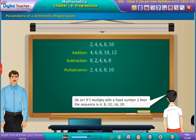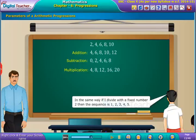If I multiply with the fixed number 2, then the sequence is 4, 8, 12, 16, 20. In the same way, if I do division, the terms remain the same.